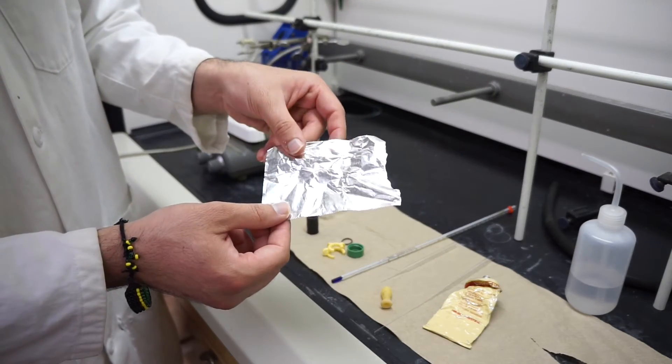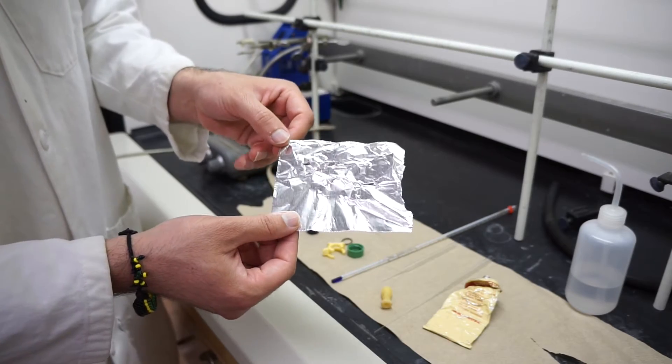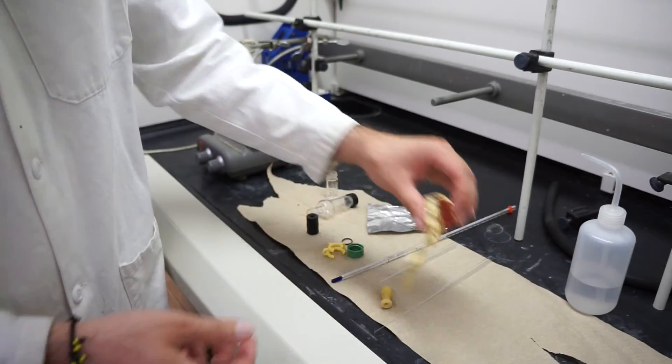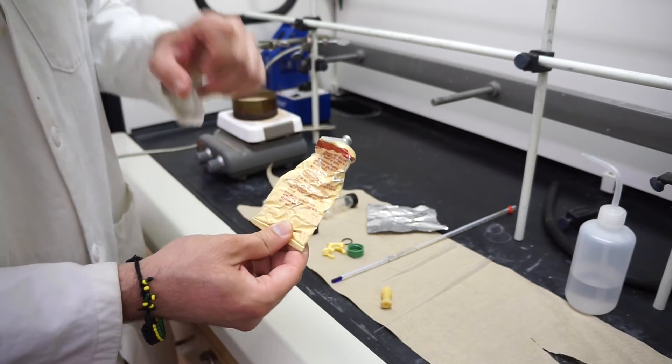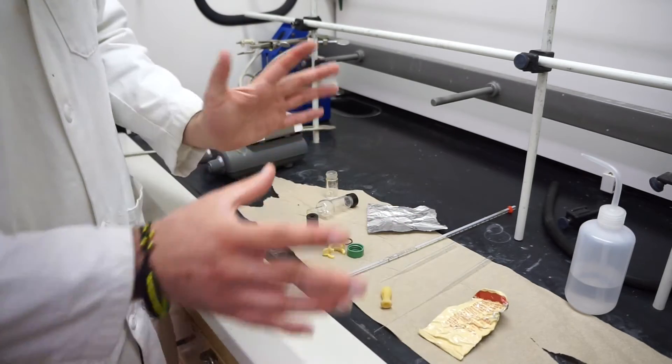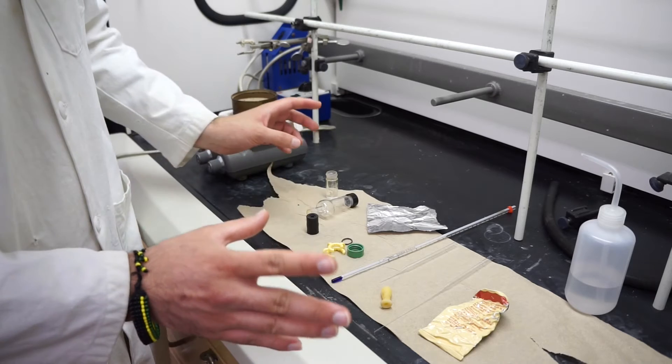Aluminum foil will definitely help you out. You only need a small piece about this big, and then some vacuum grease. Your vacuum grease may be in a syringe that says grease on it. This is the equipment we're going to need today.